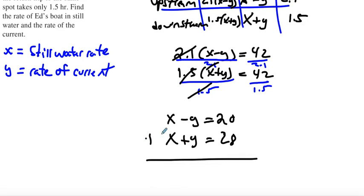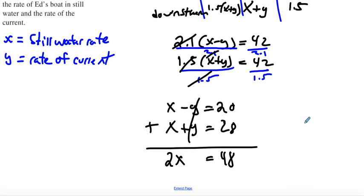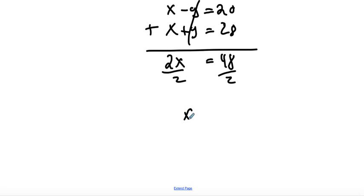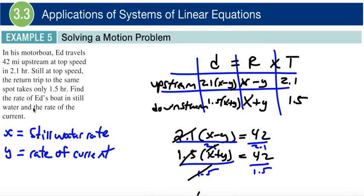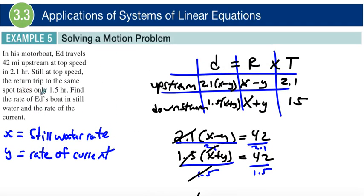So let's go ahead and combine these together. X plus x is 2x. Those cross out, and we get 48. And then we're going to divide both sides by 2, and x is going to be 24. 24 miles per hour. What does x equal again? X was the rate of Ed's boat in still water. So Ed's boat can travel 24 miles per hour without any current, just still water, no breeze, just chilling. 24 miles per hour.